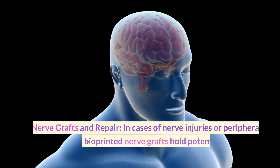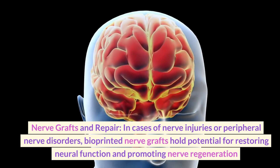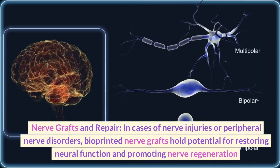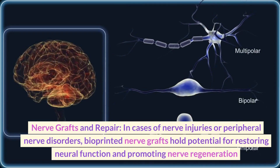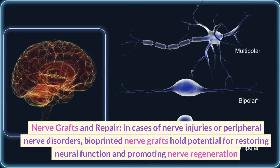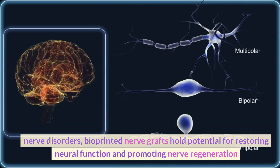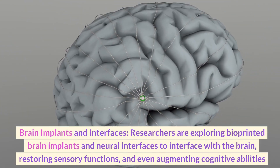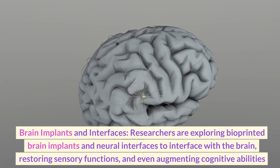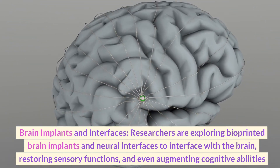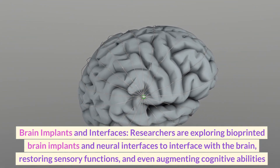Nerve Grafts and Repair: In cases of nerve injuries or peripheral nerve disorders, bioprinted nerve grafts hold potential for restoring neural function and promoting nerve regeneration. Brain Implants and Interfaces: Researchers are exploring bioprinted brain implants and neural interfaces to interface with the brain, restoring sensory functions, and even augmenting cognitive abilities.